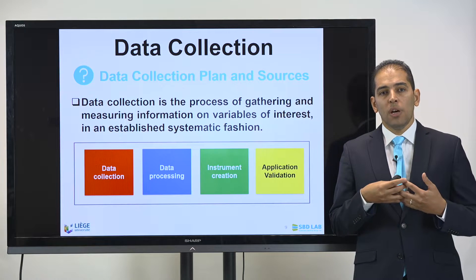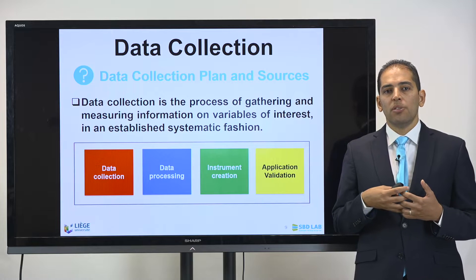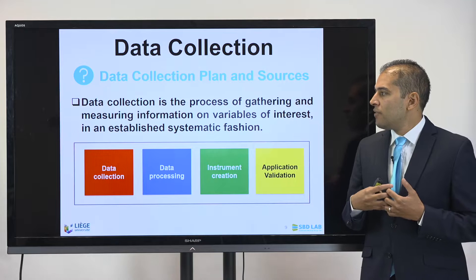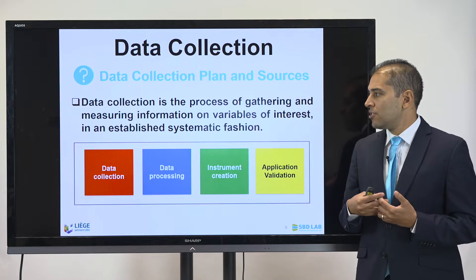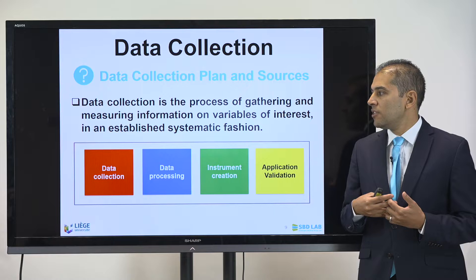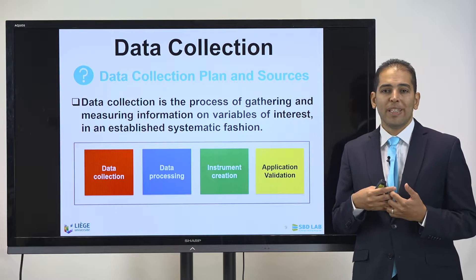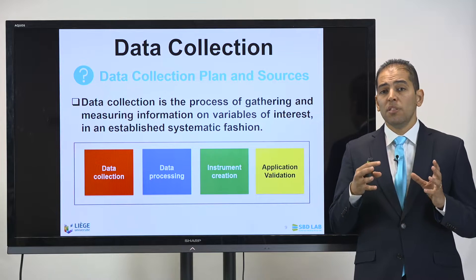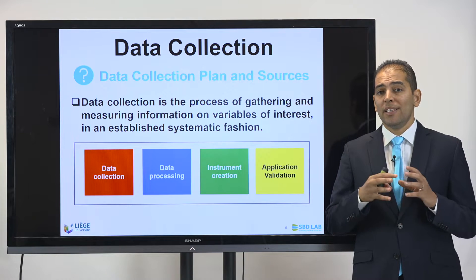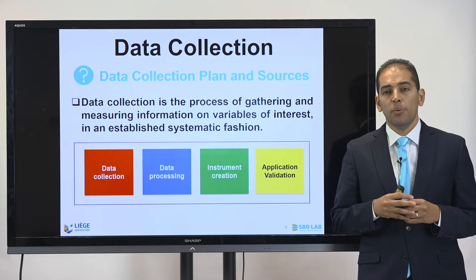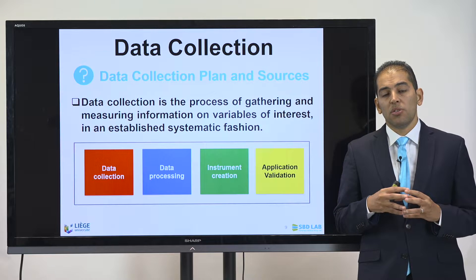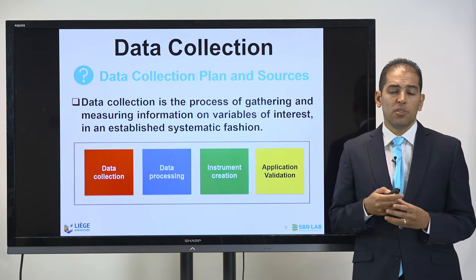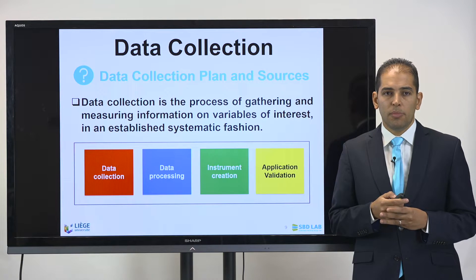When we start to do our data collection plan, we need to make sure that we are involving four stages. Data collection is the process of gathering and measuring information on variables of interest in an established systematic fashion, and it is the first step that needs to be conducted before performing any research. Sometimes people start their research and the data set is already present, so it's important to make sure you have a data set, and if not, that you have enough knowledge about this step.